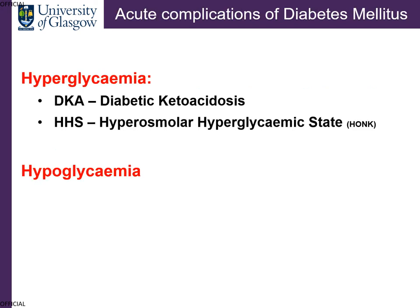In relation to hyperglycemia, there are two main emergencies that we'll be covering. One is DKA or diabetic ketoacidosis, and the second is HHS, otherwise known as hyperosmolar hyperglycemic state. It was formerly known as HONC for those who might be familiar with this older term. We'll also be talking about hypoglycemia.